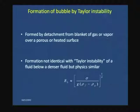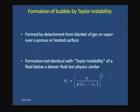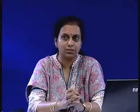The next method of bubble formation is Taylor instability. When there is a porous medium or a heated surface, a blanket of gas or vapor deposits on that surface. From this blanket, bubbles detach and start rising. Under such circumstances, r_b can be obtained from the corresponding expression — this is particularly important for film boiling.